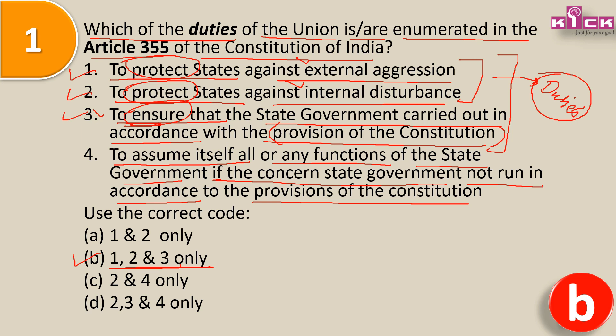Article 355 बहुत positive है। Fourth option actually is a provision of Article 356 - जब तीनों उपाय काम नहीं आते तब। Union भी जब नहीं कर पाता तब तक state को disturb नहीं करना है। First of all 355 नहीं होता तो फिर 356 आता है - if state government is not running as per the provision of the constitution. Why should not Union assist the state government by all means first?